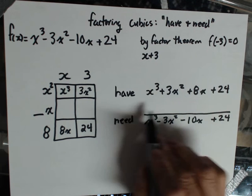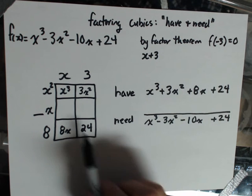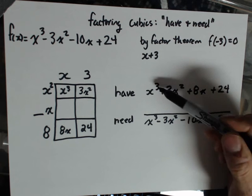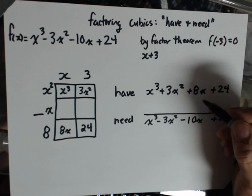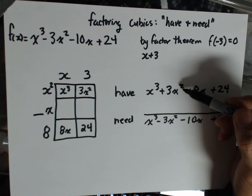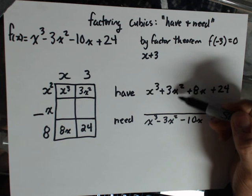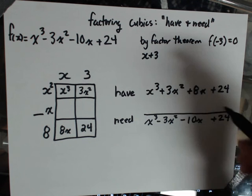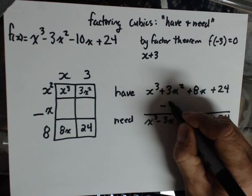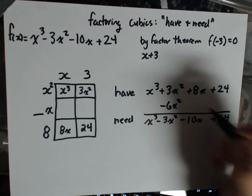I can figure out what goes in the middle here and fill in these two boxes. So the x cubed is fine, I don't need anything more than that. I have a 3x squared based on the factors that I've got so far, but I need a negative 3x squared. So I know that I'm going to need another negative 6x squared.